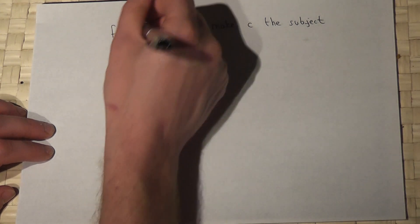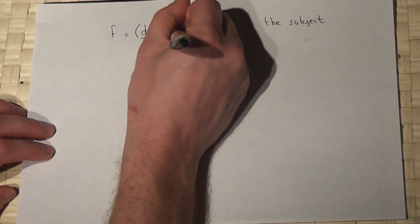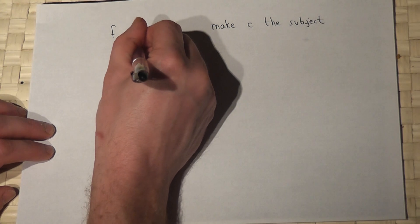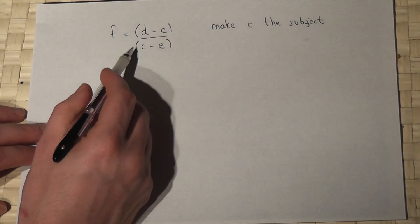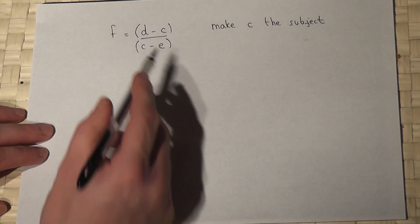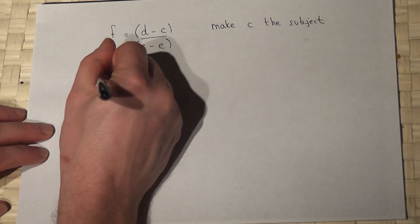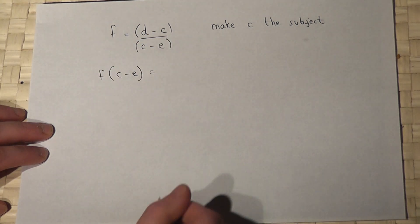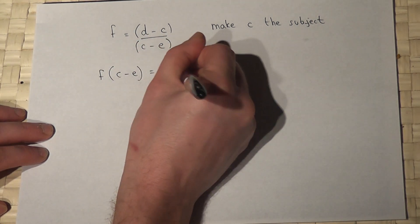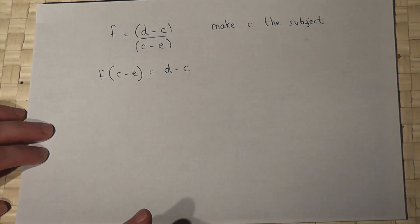Now I've got a fraction, so I'll put brackets around the top of the fraction and the bottom of the fraction, and I'll times up by C minus E. So I get F bracket C minus E equals D minus C.